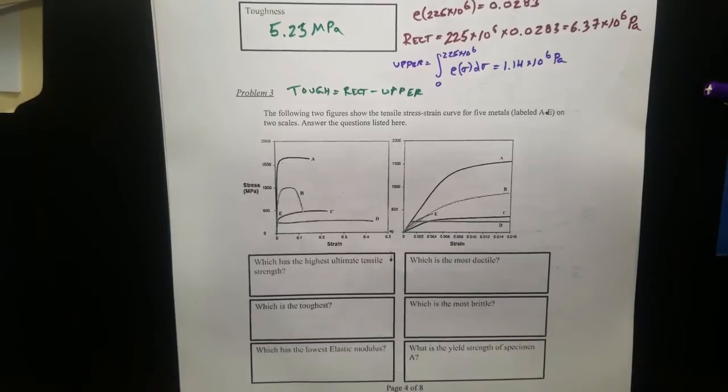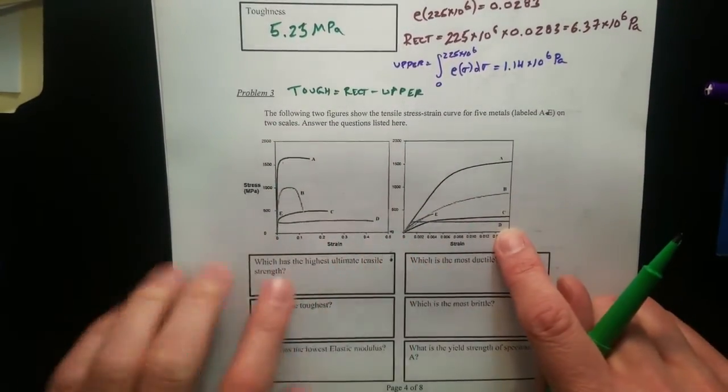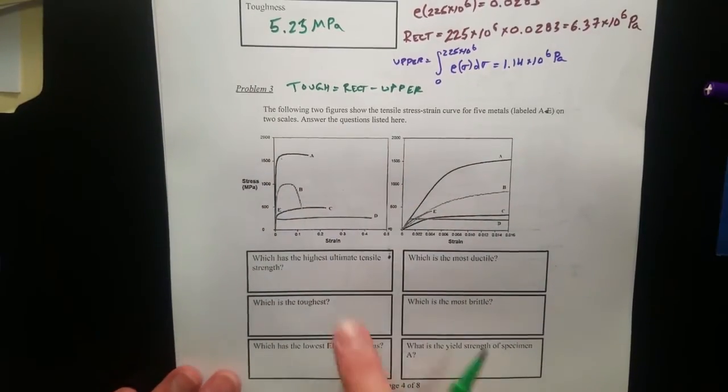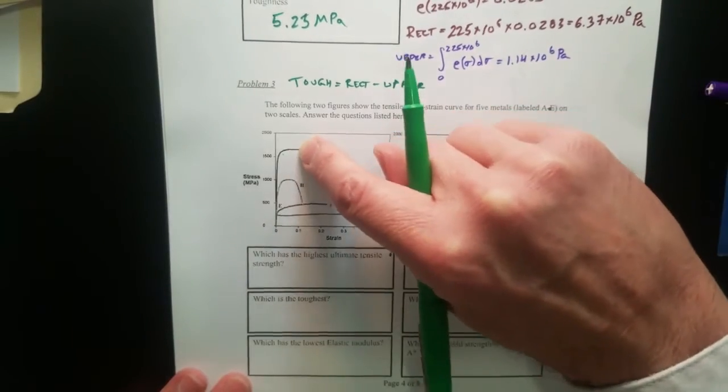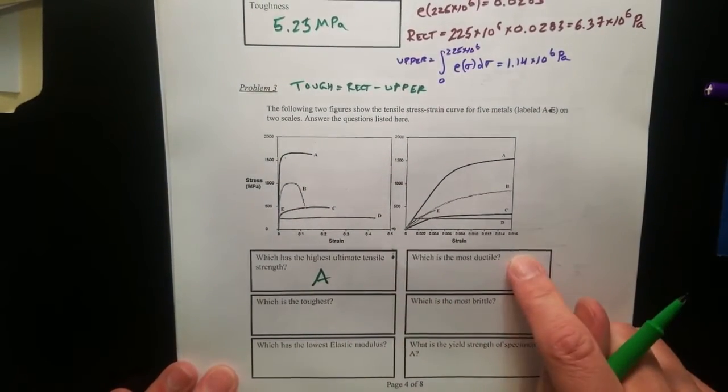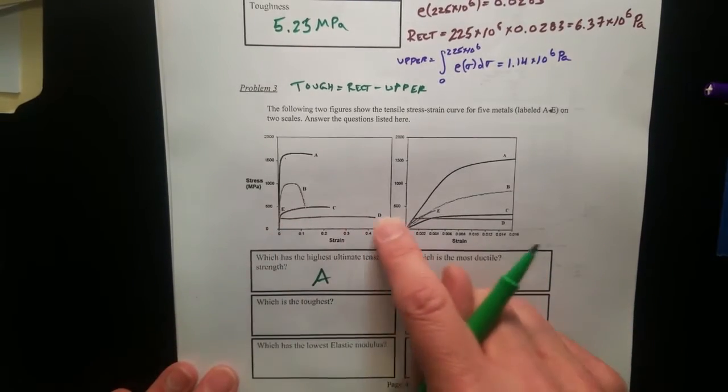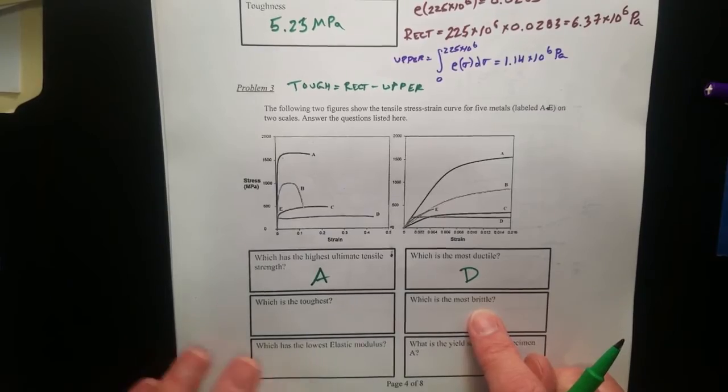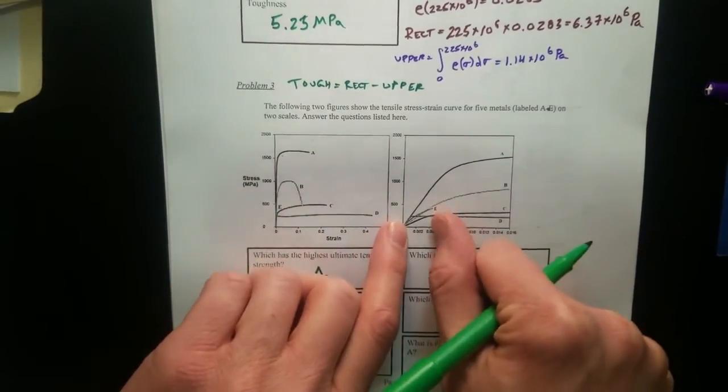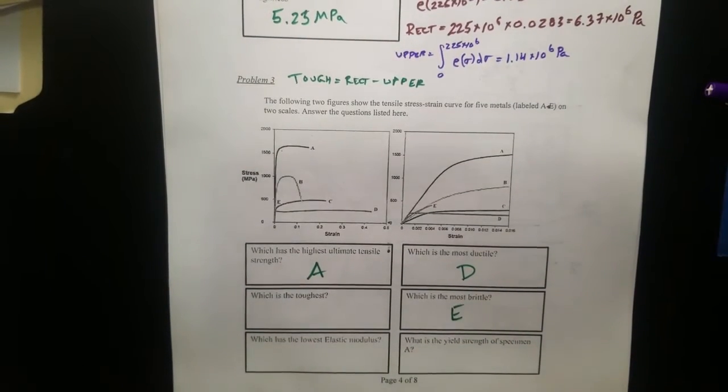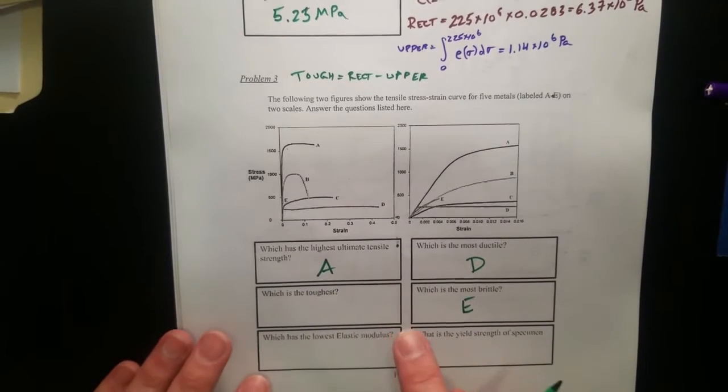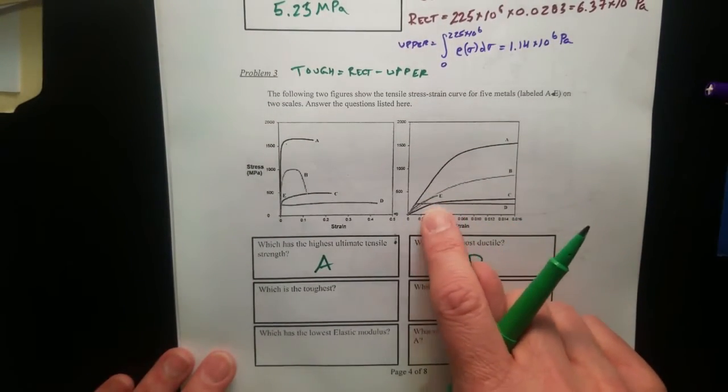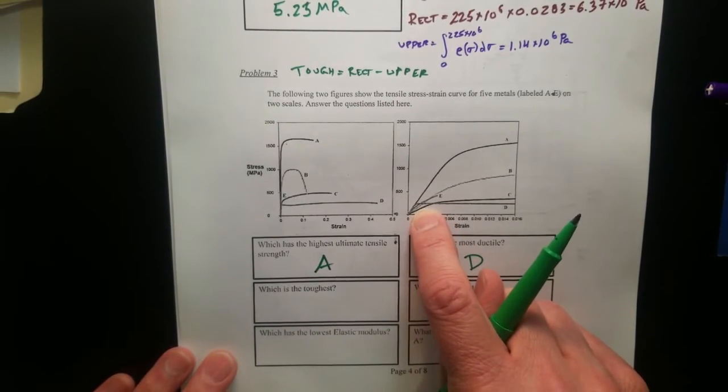Problem three. This is kind of a neat little problem. That is our stress strain curve. This is a little inset showing the zoom in of the front here. Which of these curves has the highest ultimate tensile strength? That's going to be the one that has the highest stress ever, and that is A. Which is the most ductile? Which one deforms the most? D. Which one's the most brittle? Which one deforms the least? That's E. E breaks really early.